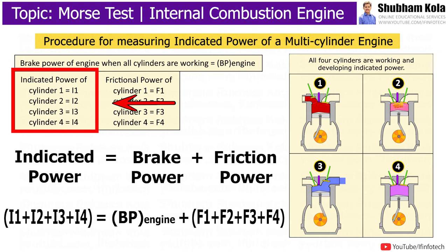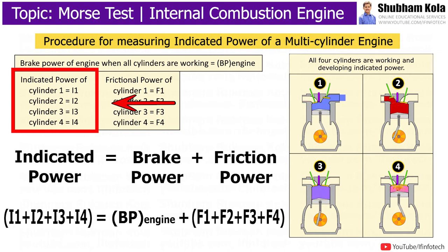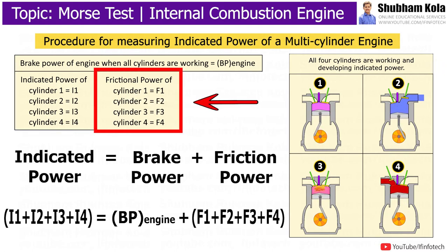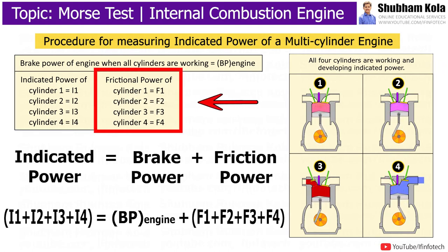Let us consider the indicated power of cylinders 1, 2, 3, and 4 to be i1, i2, i3, and i4 respectively. Where the frictional power of cylinders 1, 2, 3, and 4 is considered to be f1, f2, f3, and f4 respectively.